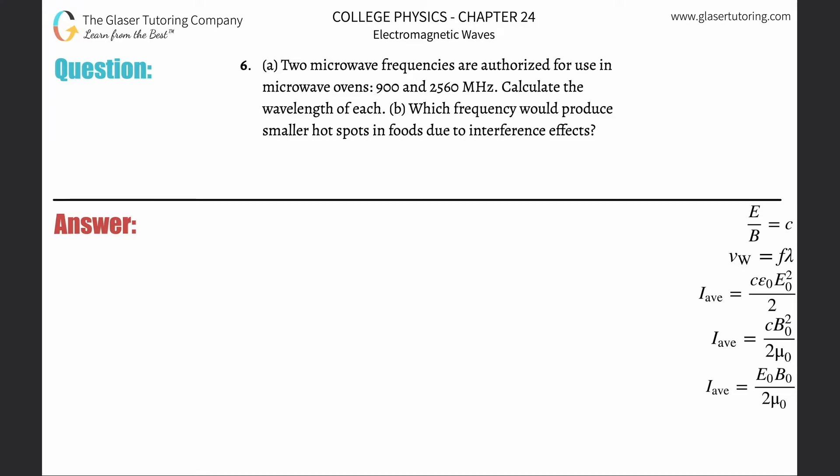Number six, letter A. Two microwave frequencies are authorized for use in microwave ovens, 900 and 2,560 megahertz. Calculate the wavelength of each.